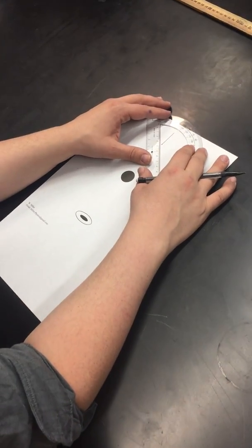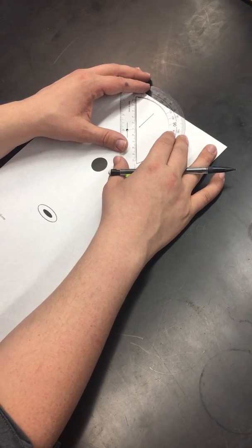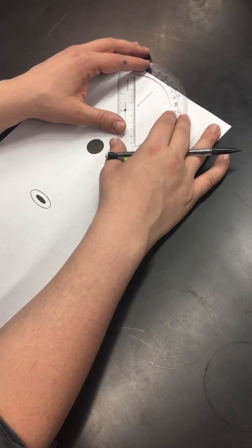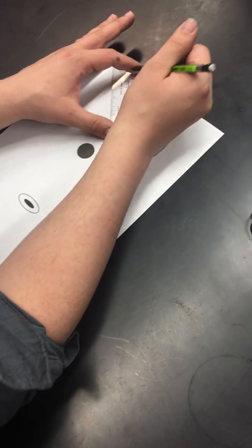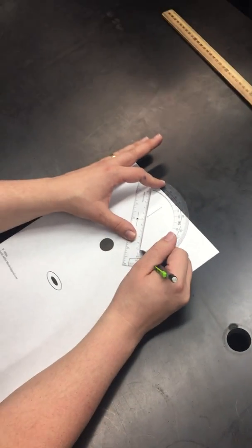I want to get a really steep angle, so I kind of line up the guy really steep. And then I just create a line like so, 10 centimeters long.